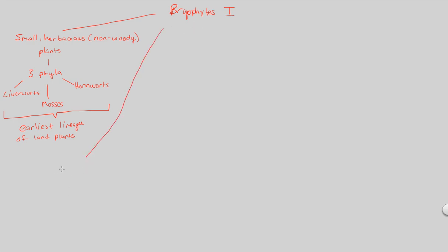First and foremost, these are very much non-vascular plants. Plants became vascular much later. Vascularity is a big evolutionary successful trait, but early land plants — the bryophytes specifically — were non-vascular. This means the plant must be small. You cannot be a large non-vascular plant; you can't transport goods throughout the plant if you're large and don't have a vascular system. You have to stay small until you develop one.